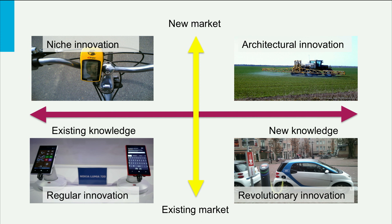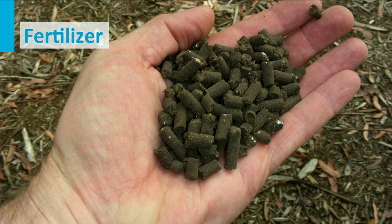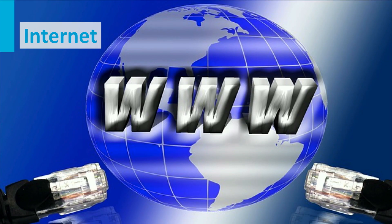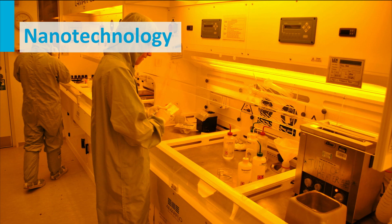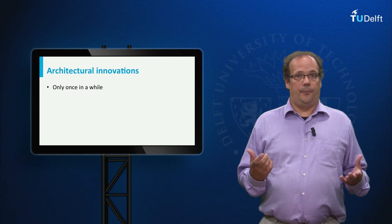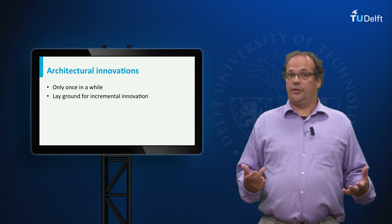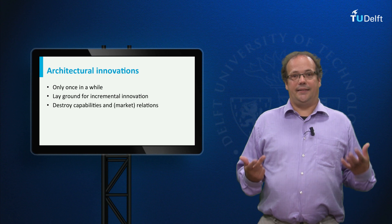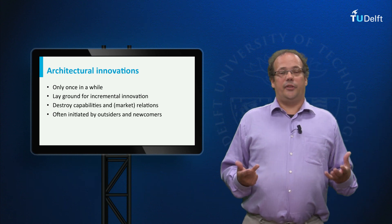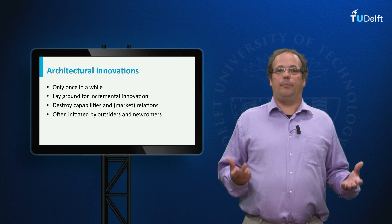There are a number of typical examples of architectural innovation: the T-Ford, the television, the first jet aircraft, fertilizers, the internet, smart grids and smart cities, and nanotechnology. All these architectural innovations share a number of characteristics. First, they only occur once in a while. Second, they lay the base for a range of more incremental innovations. Third, they destroy existing knowledge and existing market affiliations. As a consequence, they are often initiated by outsiders — new companies or companies established in other domains. Think for example of Apple entering the mobile phone market through the smartphone.